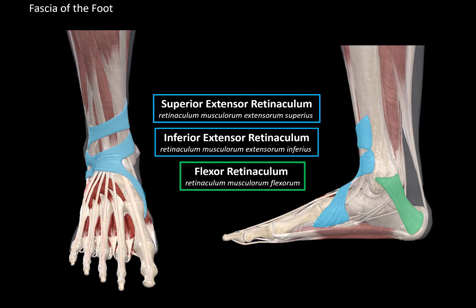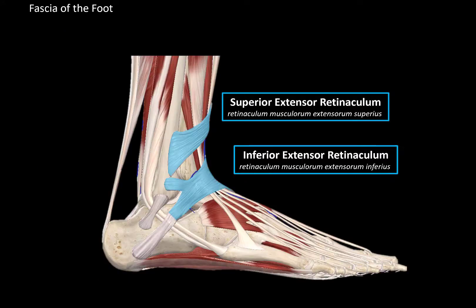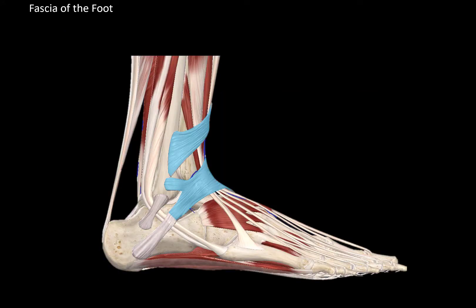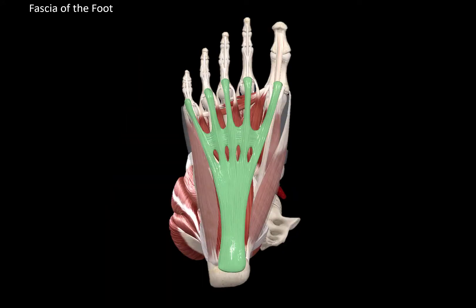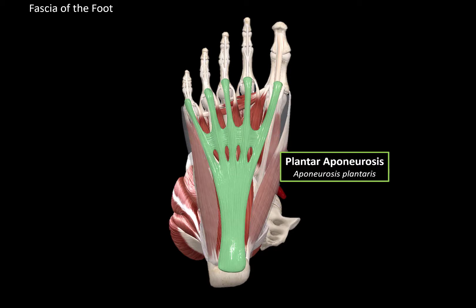If we look at the lateral view of the foot, we find two other retinacula: the superior and inferior fibular retinacula, which contain the tendons of fibularis longus and brevis. On the plantar surface of the foot we find the plantar aponeurosis, which fuses with the superficial plantar fascia. The plantar aponeurosis helps maintain the longitudinal arch of the foot, and it also fuses with the surface of the flexor digitorum brevis and covers it.